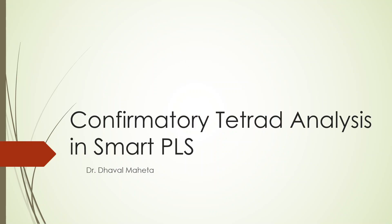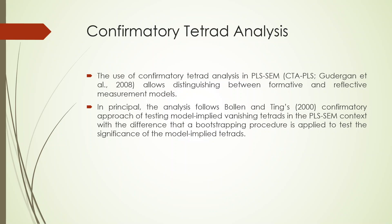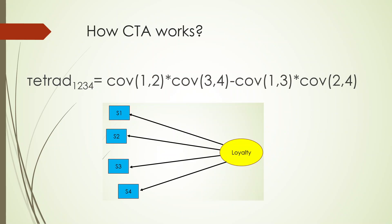Confirmatory tetrad analysis is carried out to resolve whether a construct is formative or reflective. The mathematical formula used in CTA calculates the covariance between items 1 and 2 multiplied by the covariance of 3 and 4, minus the covariance of 1 and 3 multiplied by the covariance of 2 and 4.